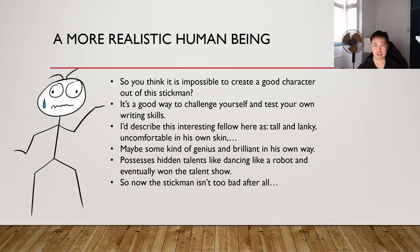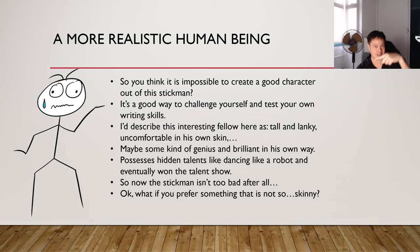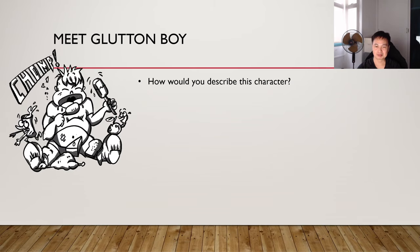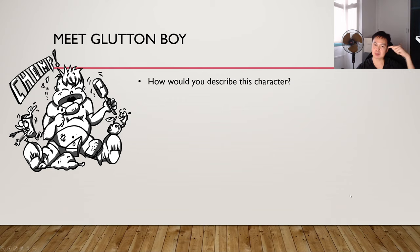So what if you prefer something that is maybe not so skinny? Now we go to the other end of the spectrum — meet Garten Boy. How would you describe this character? We see a little chubby boy in the picture, just chowing down lots of good stuff: drumsticks, ice cream, drinks, fruits, bread, cakes, and there's some dead chicken down here. So how would you describe this character? This is just one example, one illustration.